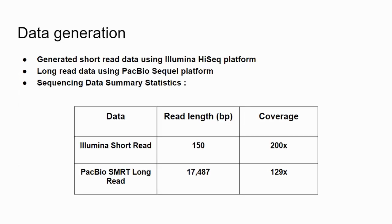Now let's look at the data generated for the de novo genome assembly. We generated short-read data using the Illumina HiSeq platform and long-read data using the PacBio platform. The data summary statistics are as shown below, and the coverage for genome assembly is considered to be good.